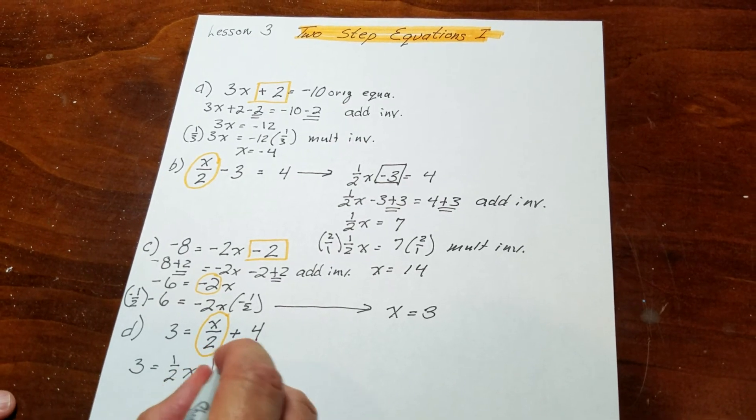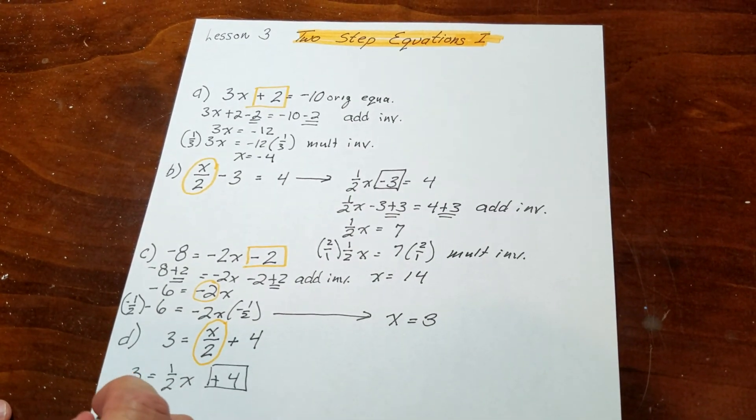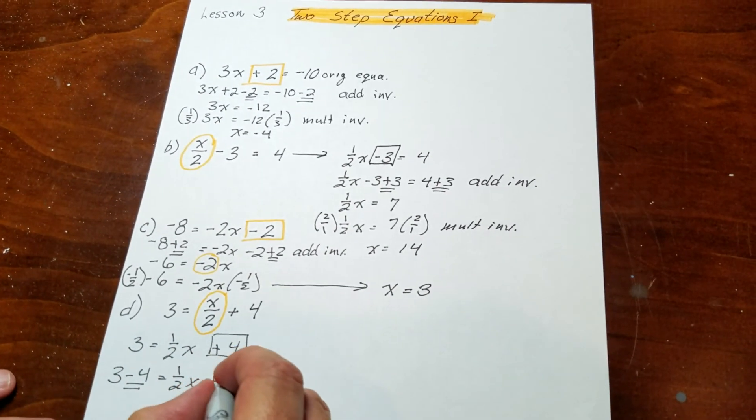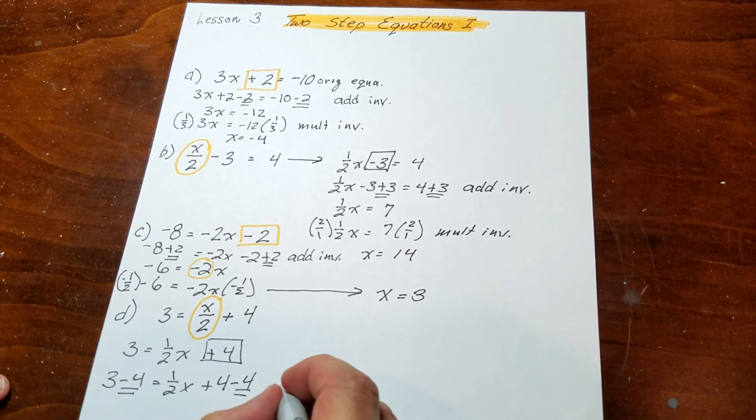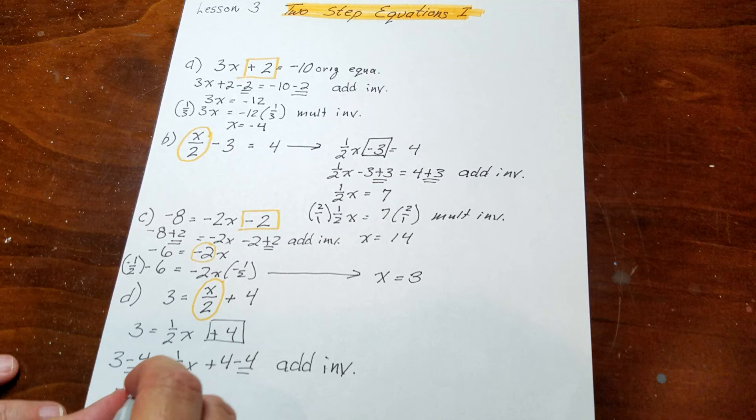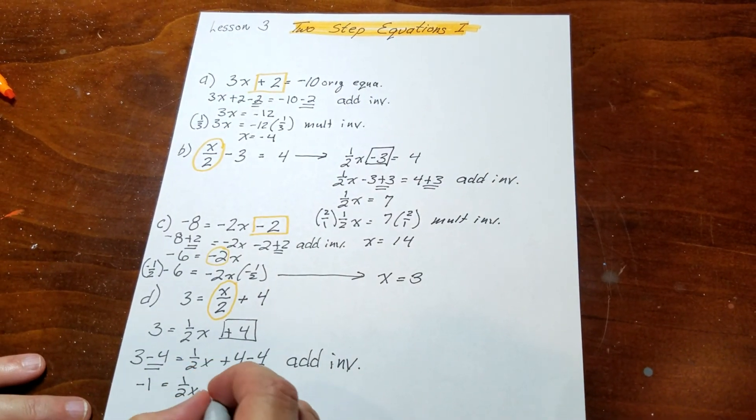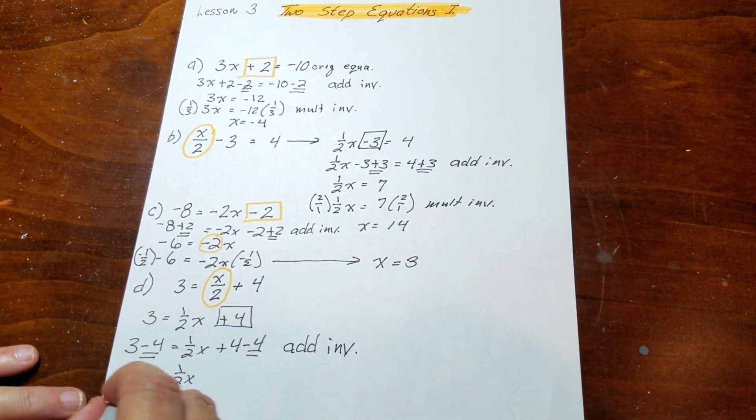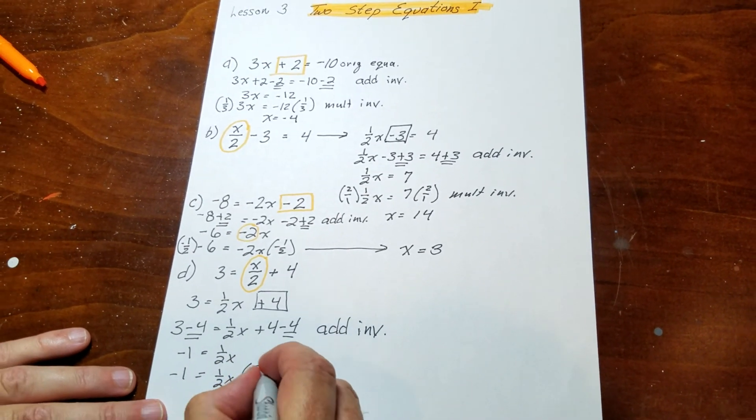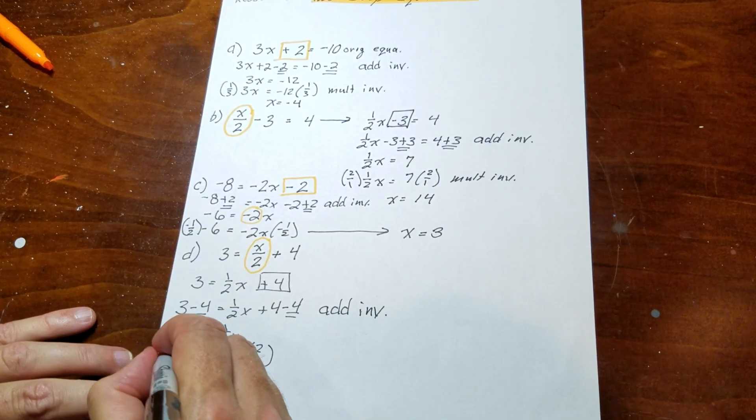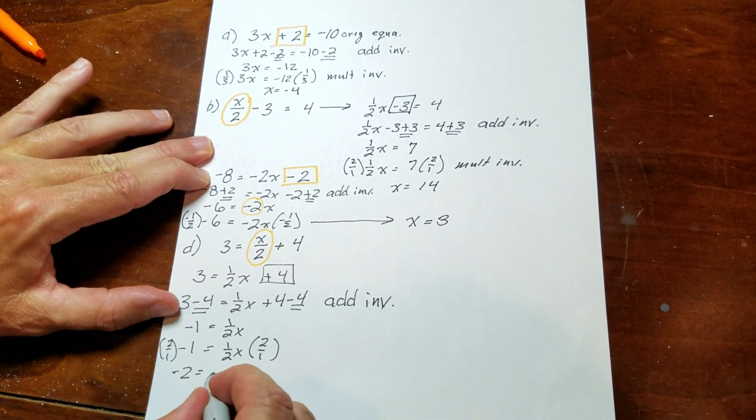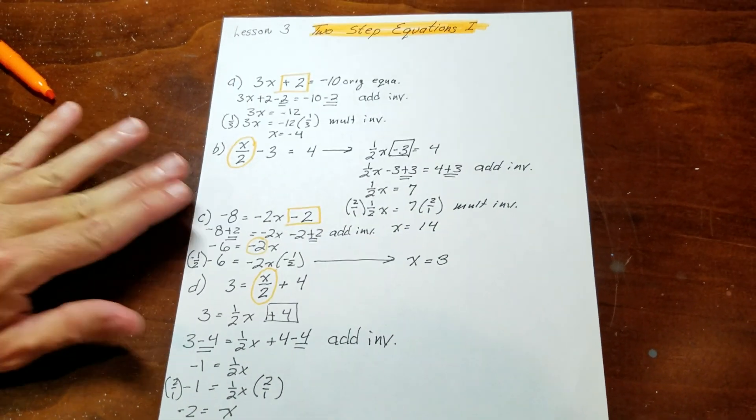And I'm going to start with the additive inverse on that 4. This is negative 1 is equal to 1 half x, and I'm going to go ahead and get rid of that. So I'm going to recopy this over, multiply this by 2 over 1, multiply this by 2 over 1, which is basically 2. Then I've got negative 2 is equal to x, and that's all there is to it.